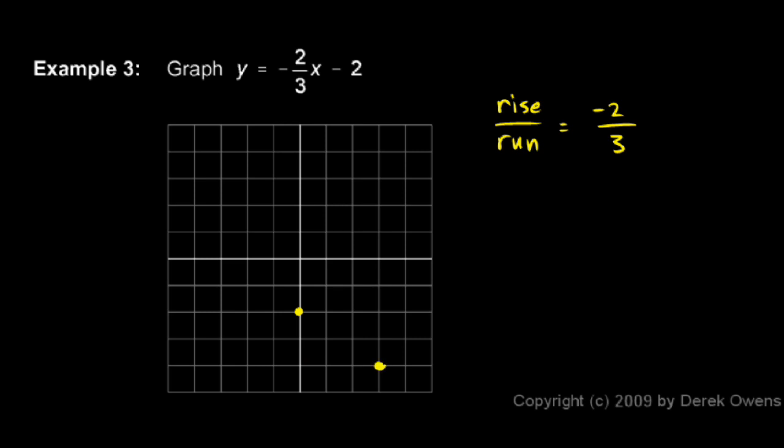You could also think of this as 2 over negative 3. The negative sign can be attached to either the numerator or the denominator, and if you had a slope of 2 over negative 3, that would be a rise of 2 and then a run of negative 3, and you can see that that's consistent with what we have. So we end up with a point there as well.